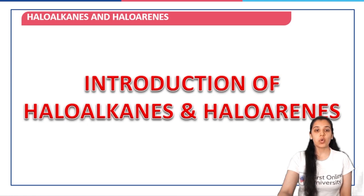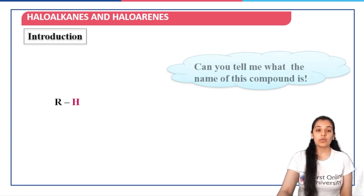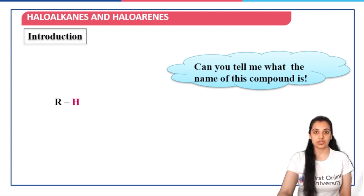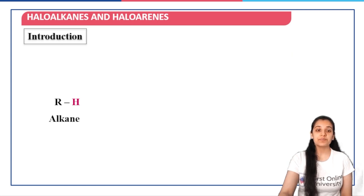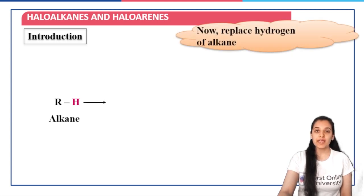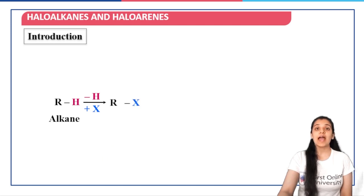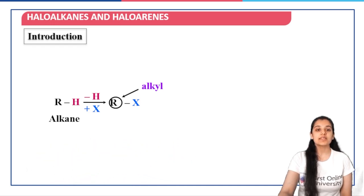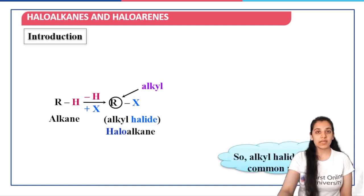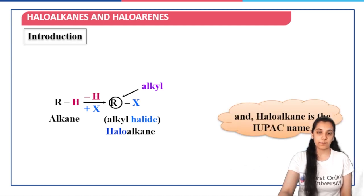Let us start with the introduction of haloalkanes and haloarenes. When we talk about the simple compound RH, we call it an alkyl group. But when this hydrogen is replaced by a halo group — that is a halogen — we get RX as the product, and it is called a haloalkane. R is simply the alkyl part and X is the halogen group. The common name of this compound is alkyl halide, and the IUPAC name is haloalkane.